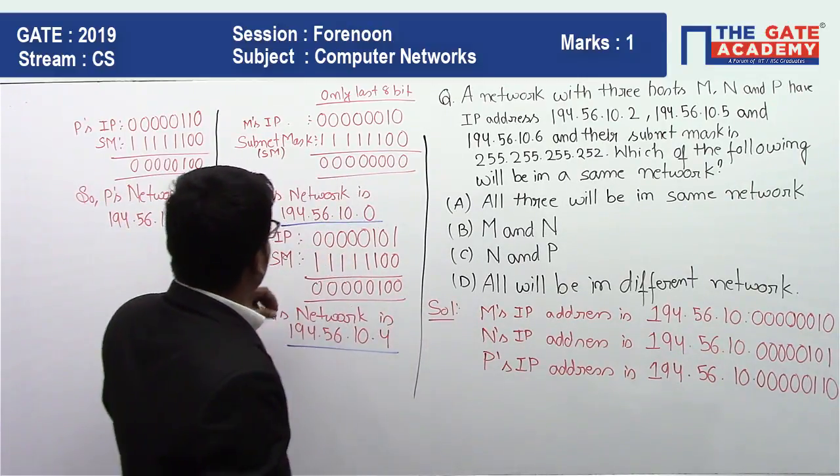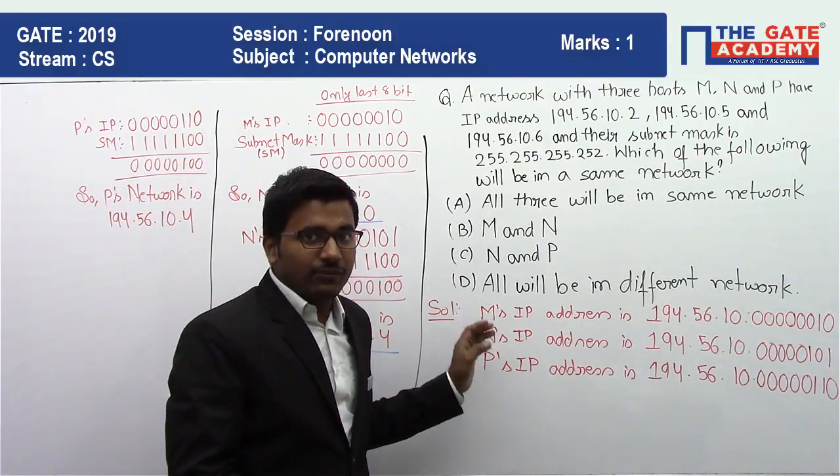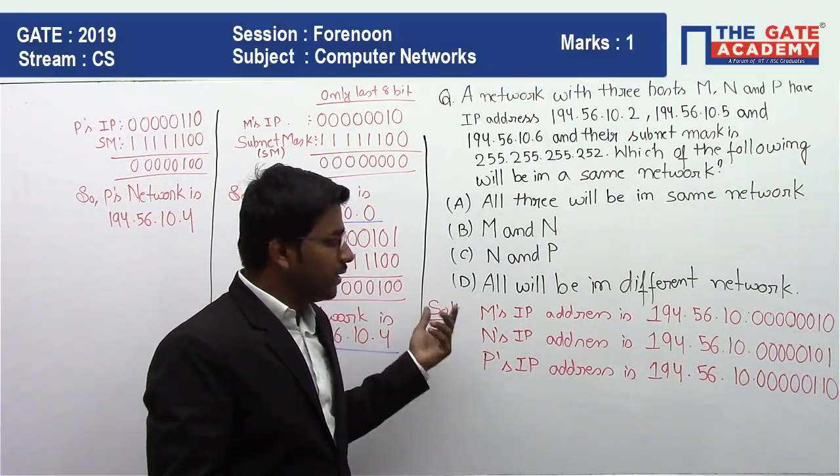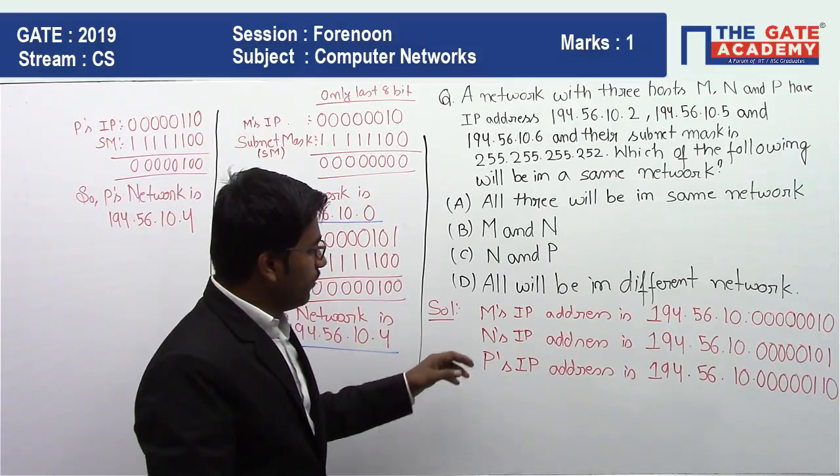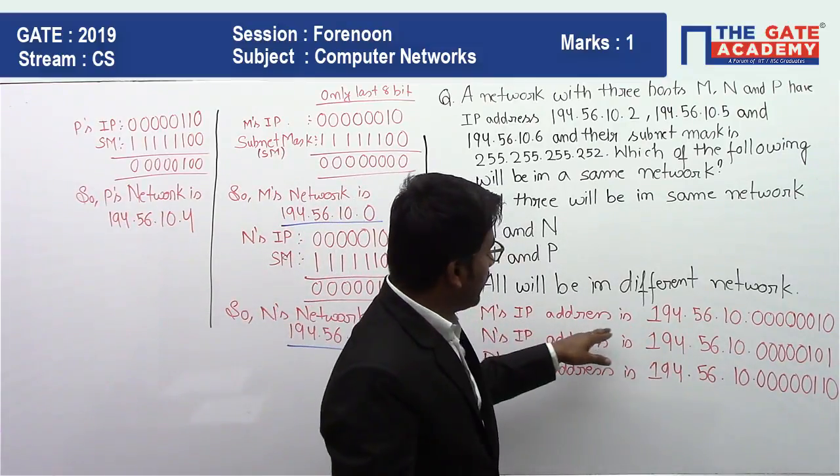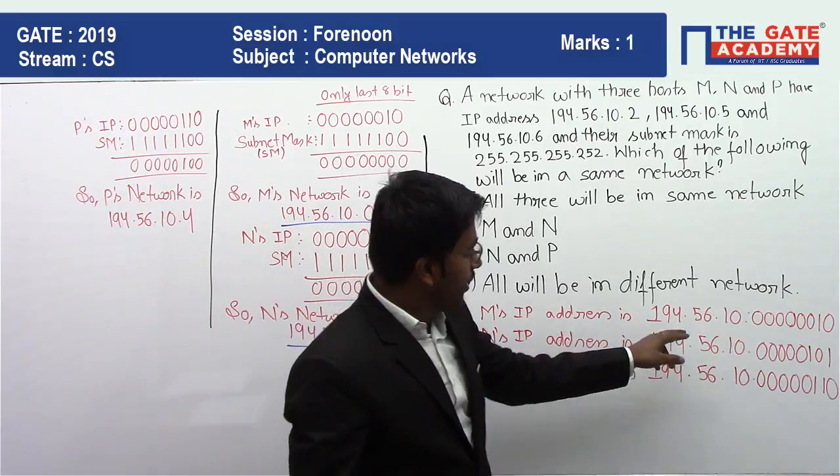If the network ID will be similar for any of these, then we can say that these are in same network. So first we will write the IP address of all the three M, N, and P hosts.